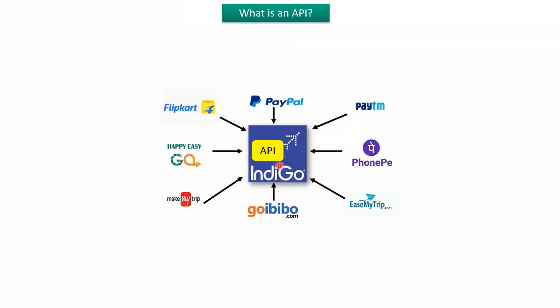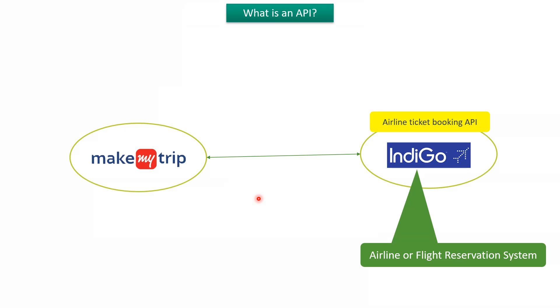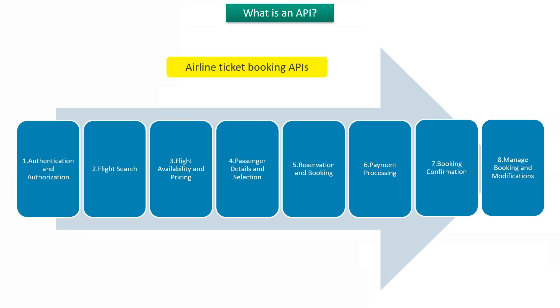Using APIs, Paytm, PhonePe, and GoIBEO get flight detail information and booking prices from the Indigo server, and they display those details on their own websites so users can book tickets. We will see what are the different airline ticket booking APIs that Indigo has to expose to MakeMyTrip. Here you can see the different kinds of APIs the flight reservation system has to expose.